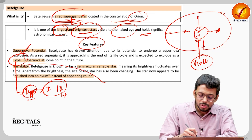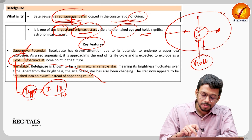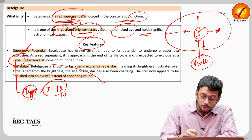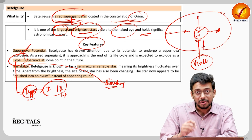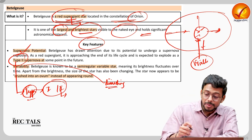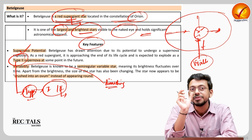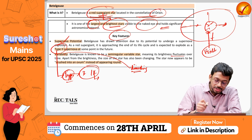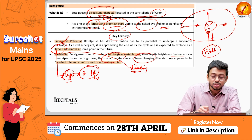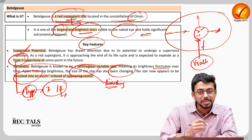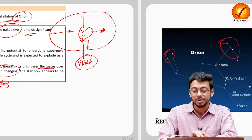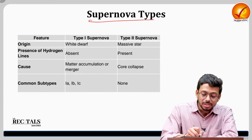Variability is another key feature of Betelgeuse. The light of this star keeps changing — it keeps dimming sometimes and then becomes bright again. This gives us a dimension to understand the phenomenon of diminishing light and helps us understand what happens at the end phase of a star. Its brightness fluctuates over time, the size also keeps changing, and it appears to have an irregular shape — all very unique features for a star.